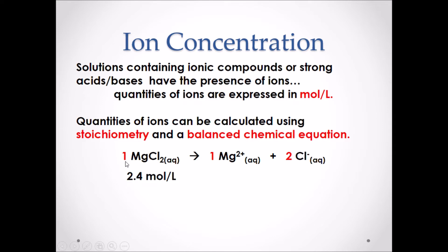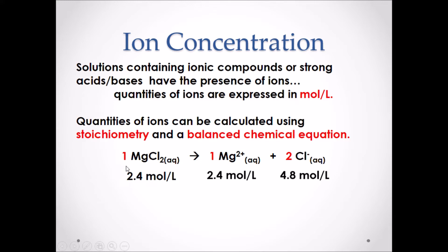For example, if we dissociate one mole of magnesium chloride, we will have one mole of magnesium two-plus ions and two moles of chloride ions. If we are starting with 2.4 moles per liter of magnesium chloride, in the solution we will then have 2.4 moles per liter of magnesium two-plus ions and 4.8 moles per liter of chloride ions. We can find the concentration of ions by using the molar ratio in the chemical equation.